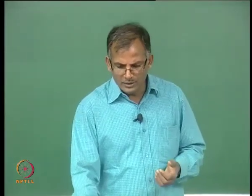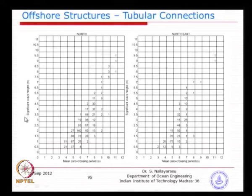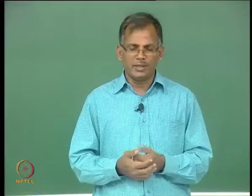In one such wave scatter data, each direction is given with respect to wave height and wave period. You can see a slight difference in this particular wave scatter diagram — we have significant wave height rather than the maximum wave height. As you know, the wave spectra is described by significant wave height and peak period, whereas the deterministic wave data uses maximum wave height and the zero crossing wave period.